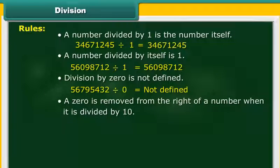A 0 is removed from the right of a number when it is divided by 10. 9876540 divided by 10 is equal to 987654.